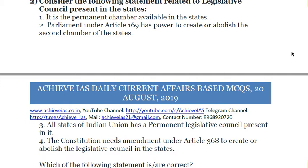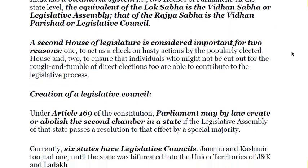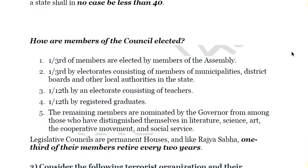First is correct — the Legislative Council (Vidhan Parishad) is a permanent chamber available to states; it doesn't dissolve like the Rajya Sabha. Second is also correct — Parliament under Article 169 has the power to create or abolish the second chamber of states. Third is incorrect — only seven states have a Legislative Council. Fourth is also incorrect — creation of a Legislative Council by Parliament does not constitute an amendment under Article 368. So the answer is B — one and two are correct.